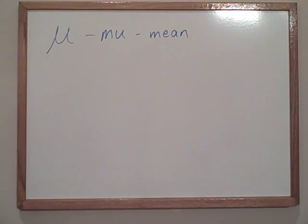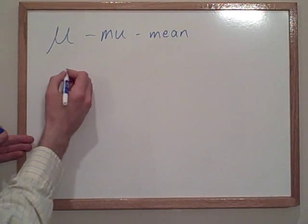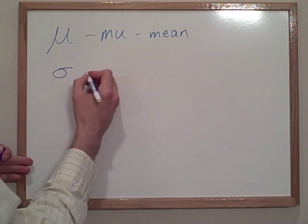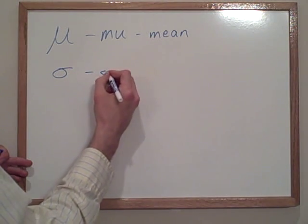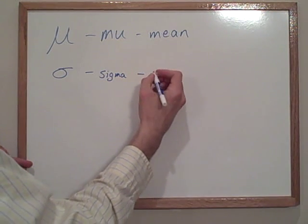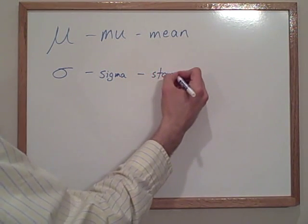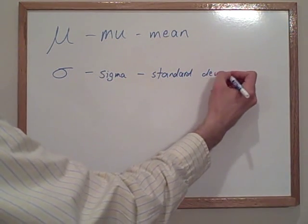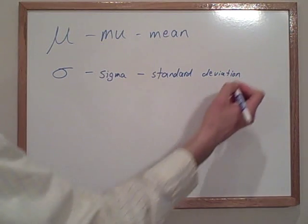The other one you're going to need to know is this. It looks like a six that got knocked over, and this is called Sigma. It's a lowercase Sigma and it is the standard deviation.